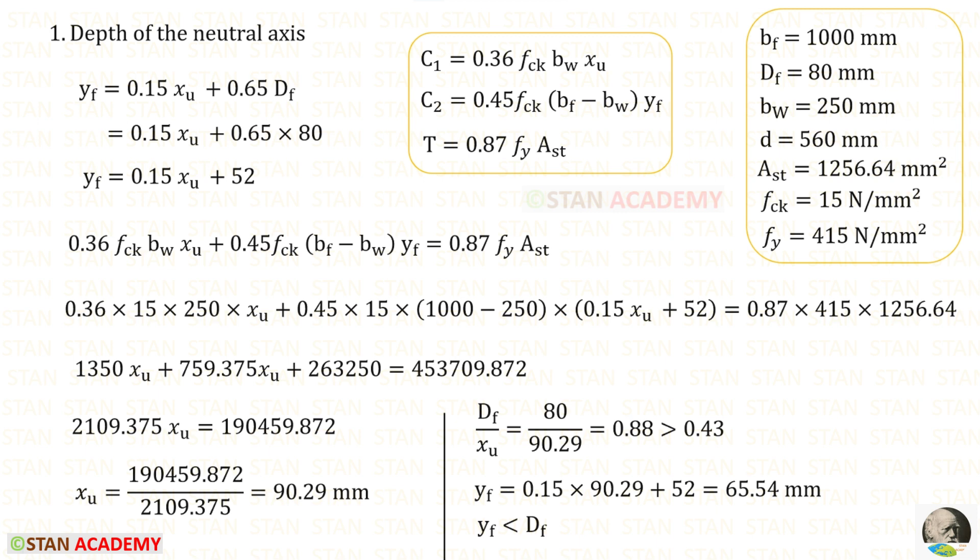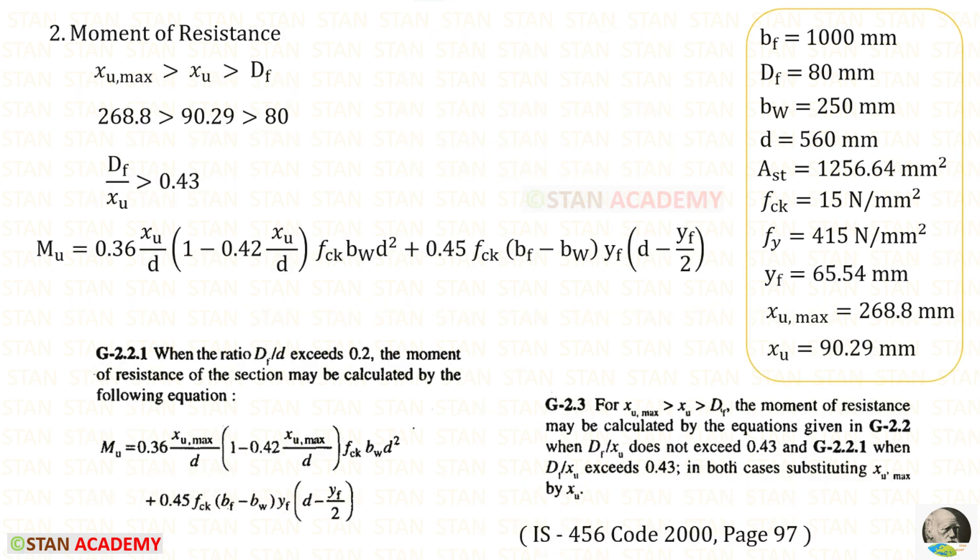We know that Df upon xu should be more than 0.43. In this one, we can apply the value of xu. So that for Yf, we will get this which is not greater than Df. When Df upon xu exceeds 0.43, we need to use the equation in G 2.2.1. That is this one.